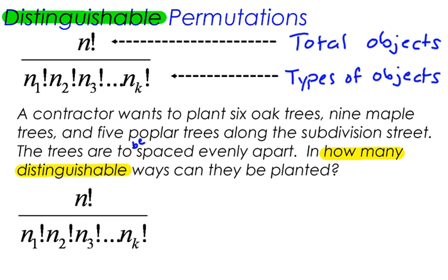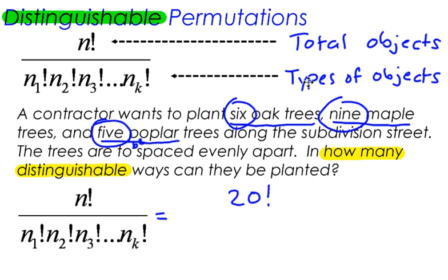So let's take a look here. I've got 6 oak trees, 9 maple trees, and 5 poplar trees. How many do I have all together? I have 6, 9, and 5. 6 plus 5 is 11, and 11 plus 9 is 20. So if I start to fill in this formula, the total number, n factorial, is 20 factorial.